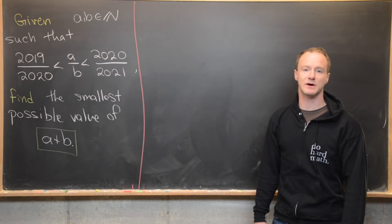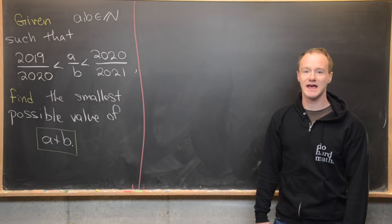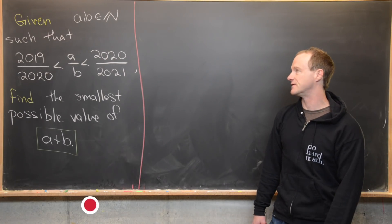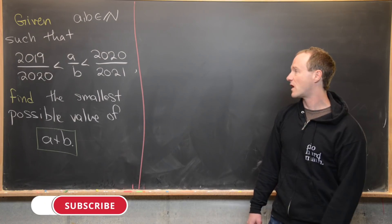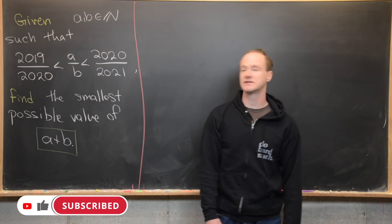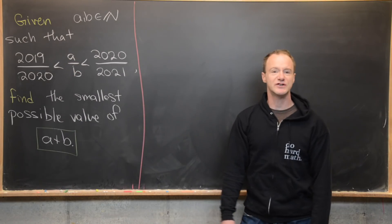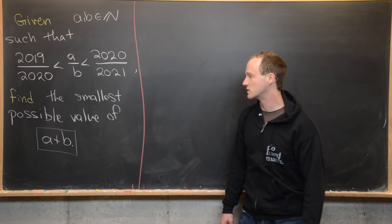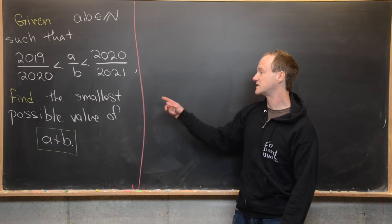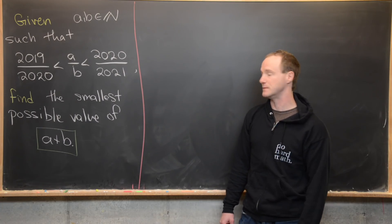Here we're going to look at a nice little arithmetic puzzle. We've got some natural numbers a and b — positive integers — and we have the following inequality: 2019/2020 < a/b < 2020/2021. Our goal is to find the smallest possible value of a plus b.